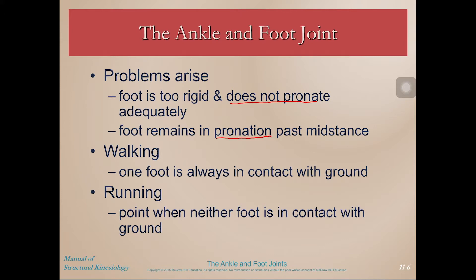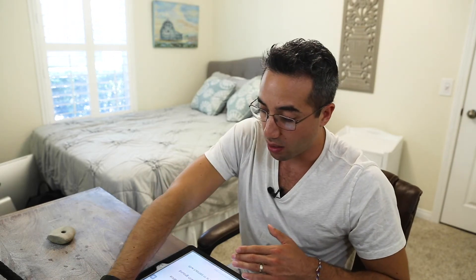The distinction between walking and running gait is that when you're walking, one foot will always be in contact with the ground. As you go through the swing phase on your right leg, your left leg is on the ground. As you heel strike on your right leg, your left leg is at toe off, ready for its swing phase. When you're running, however, there's a point at which both feet are off the ground.